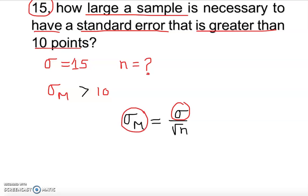We know this one and this is given. So let's take a look. 10 is equal to 15 over square root of n.